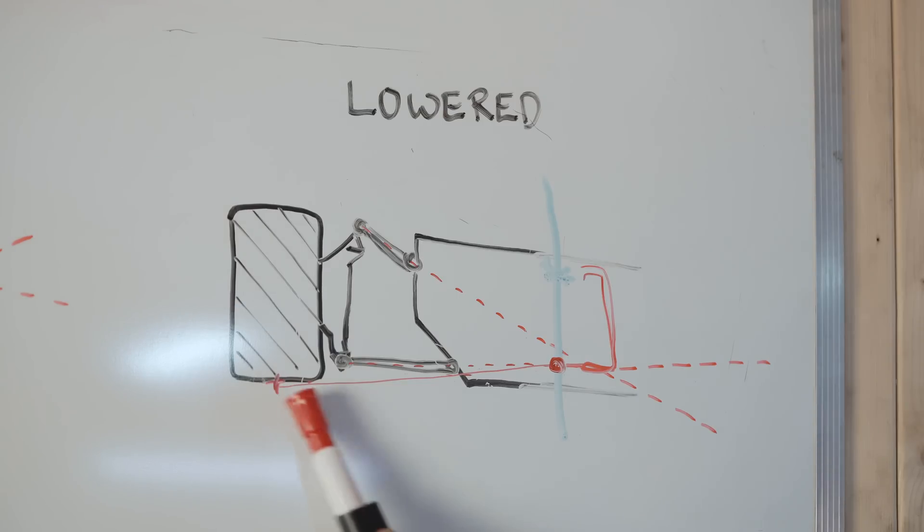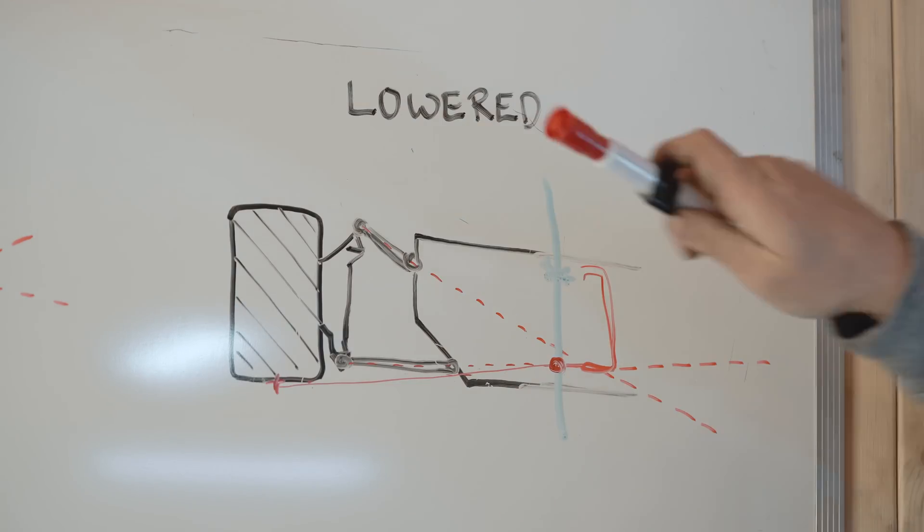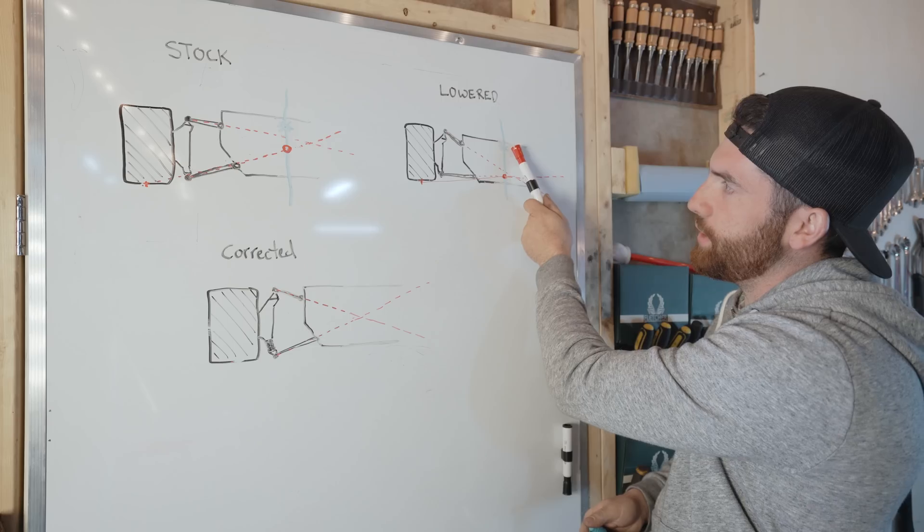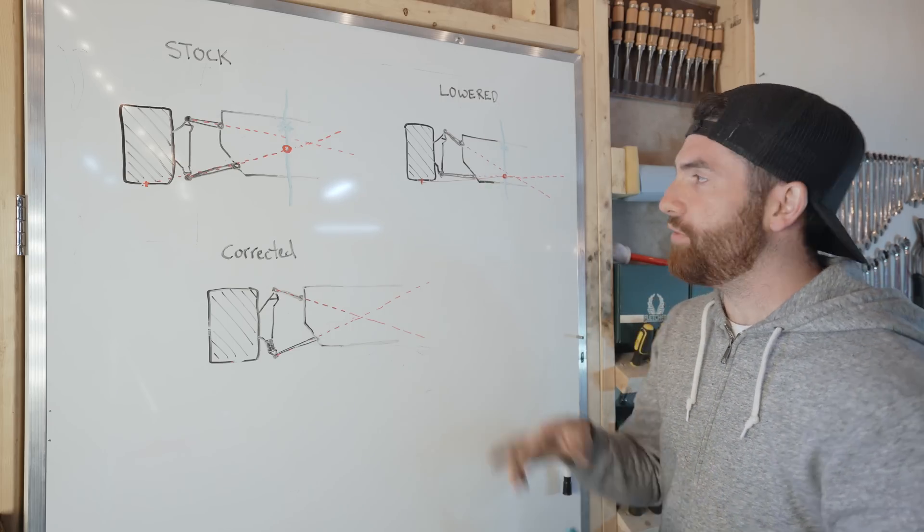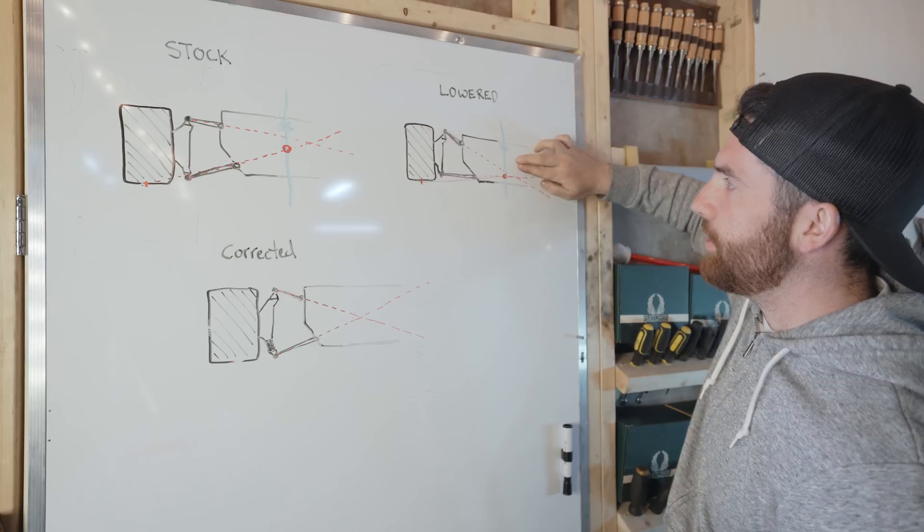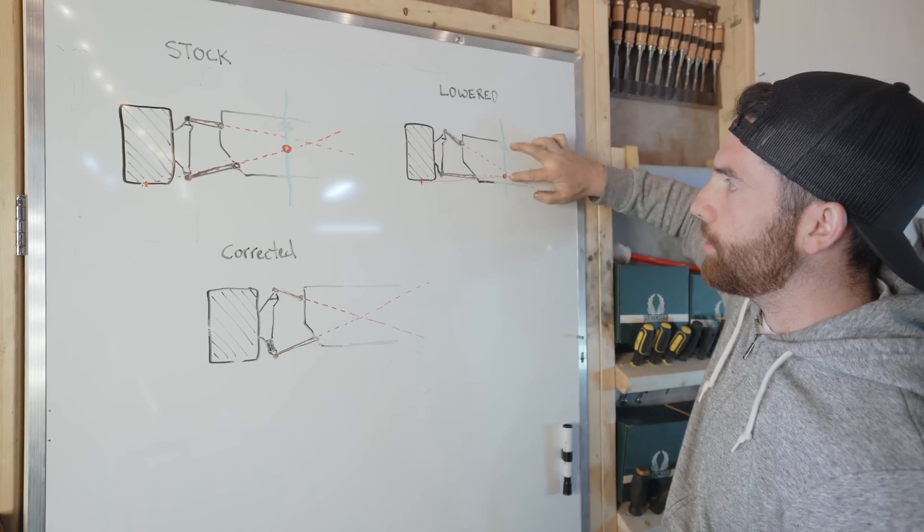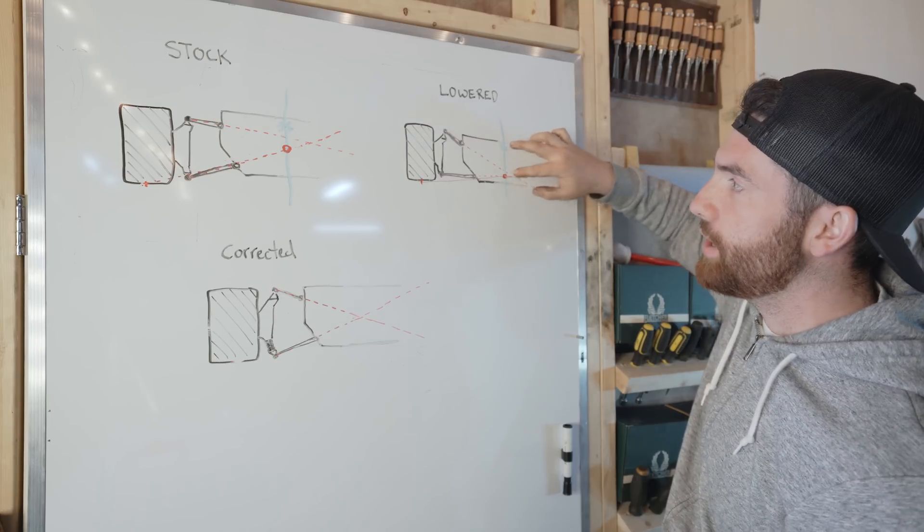This is our center of gravity. If I take a line now and I draw it between the center line of the wheel and where these two points meet, you can see now this is our roll center. Now the space in between the center of gravity and the roll center, you can imagine as a lever, a mechanical advantage for the suspension.